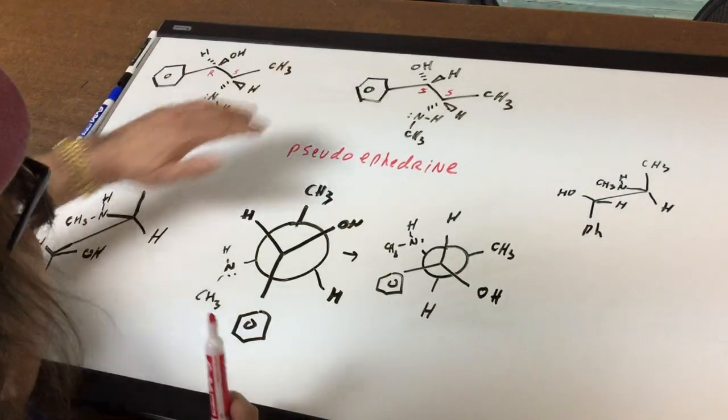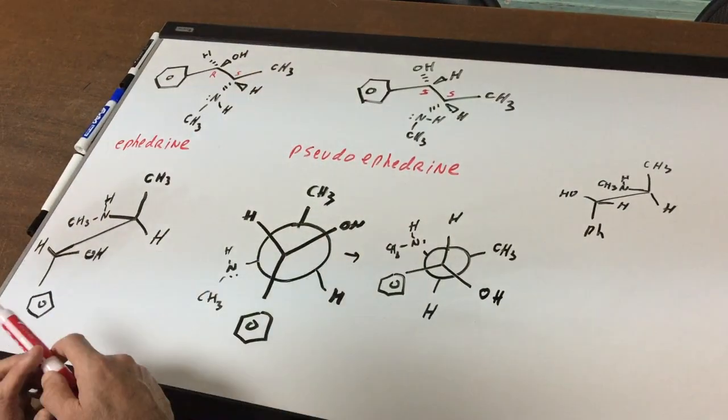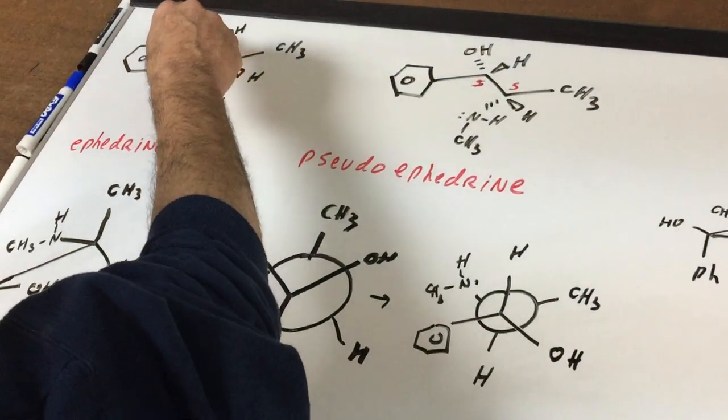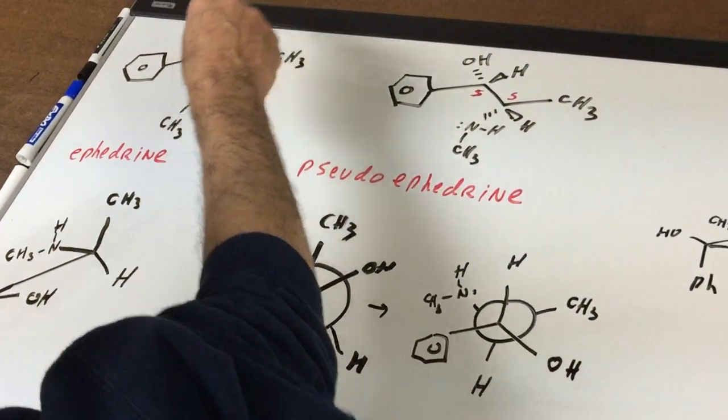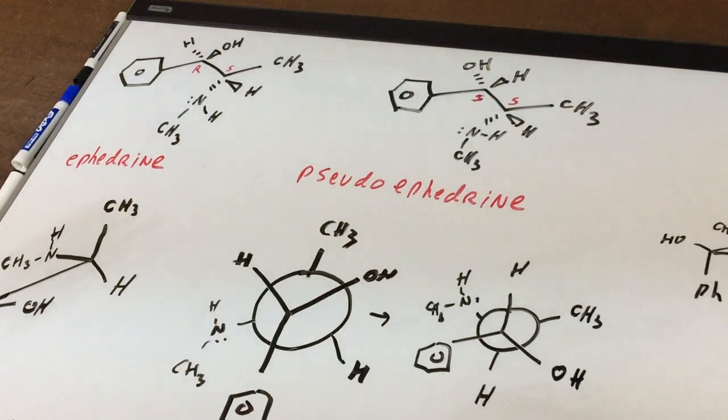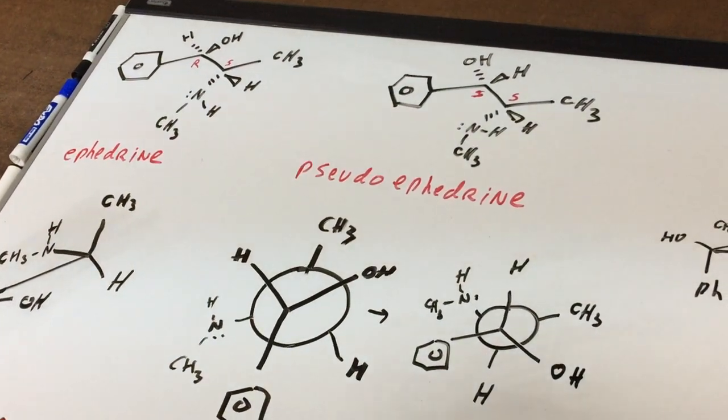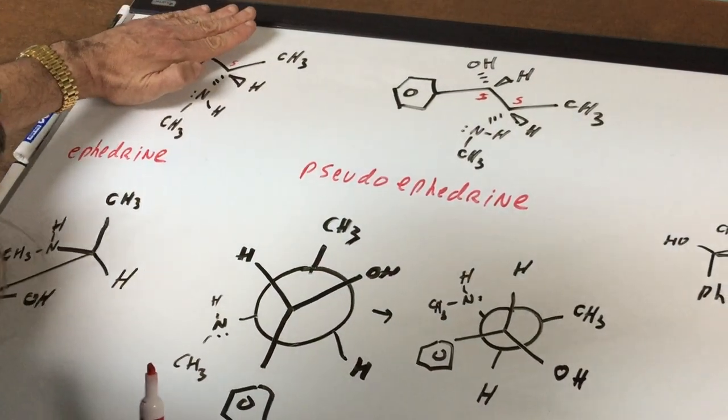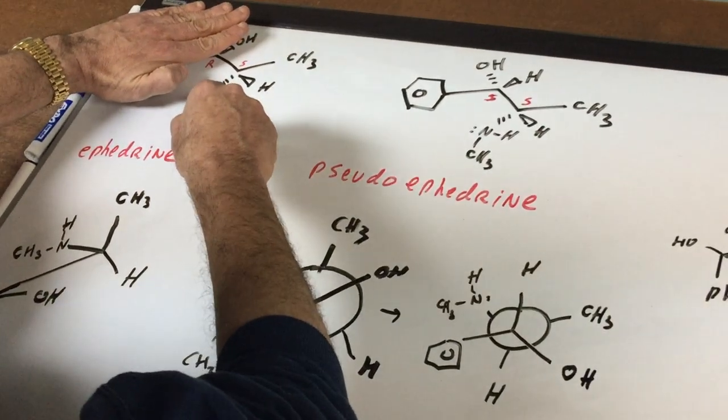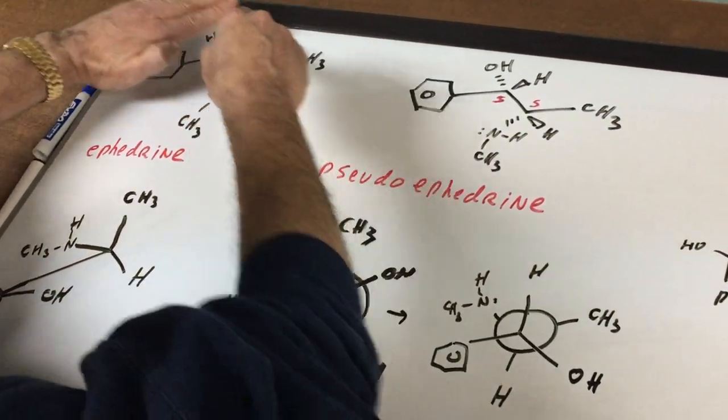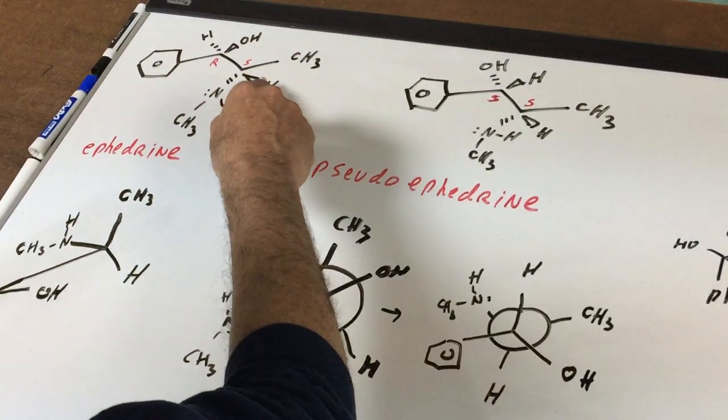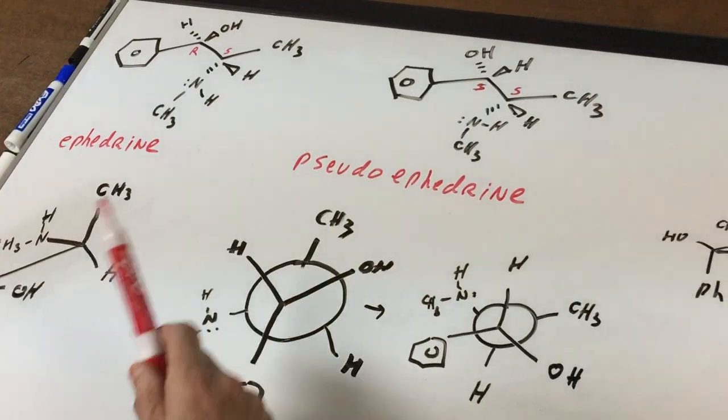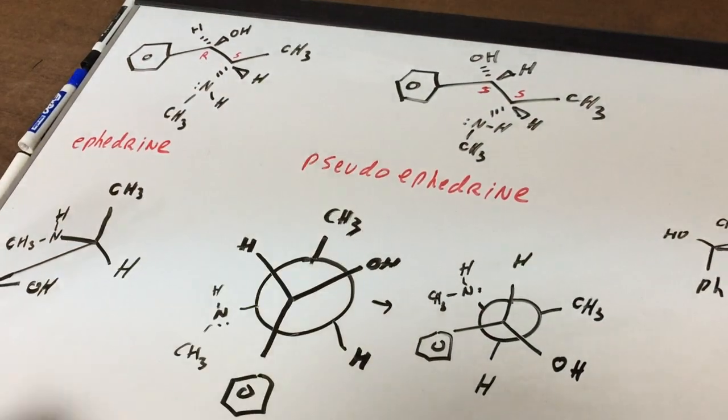Now, if you covered this side up with your hand, the right side, the OH would be the first priority. This group would be the second. Number four is a dash, which means it's in the correct position. And I'm hoping you can see it's an R. We've done this in another tape. So you get an R configuration here. And then if you cover this side up with your left hand, the nitrogen is number one. And this side is going to be number two. It looks like an R, but because the group of lowest priority is a wedge, it's going to be an S. So you get an R and an S on this side.